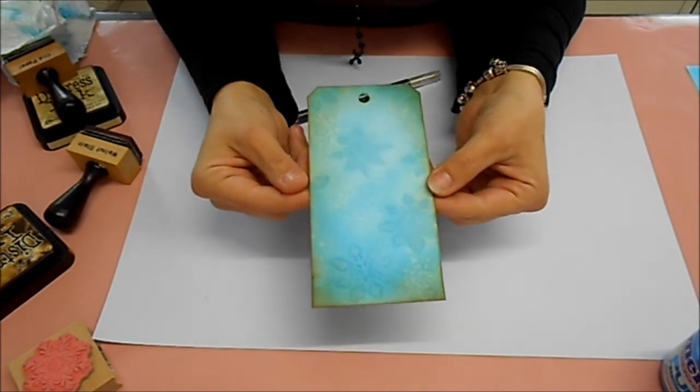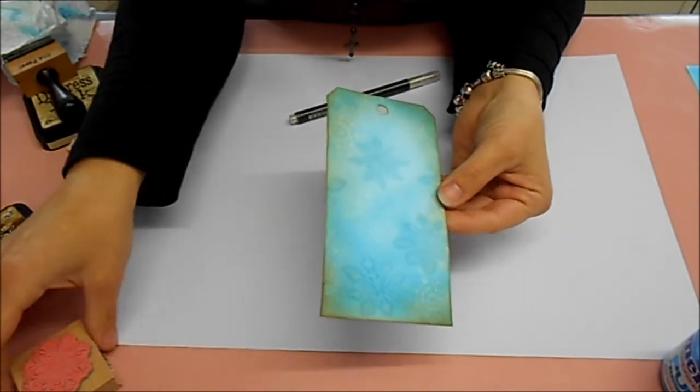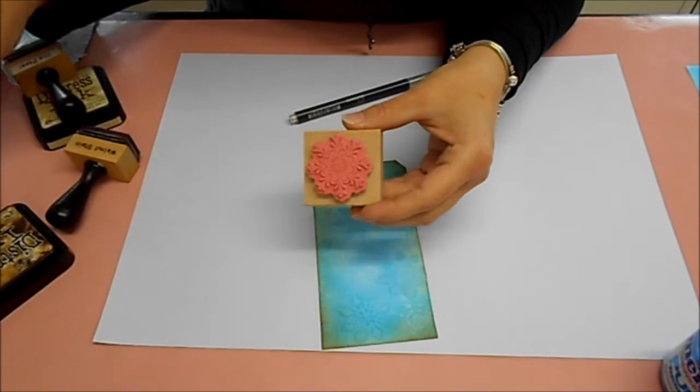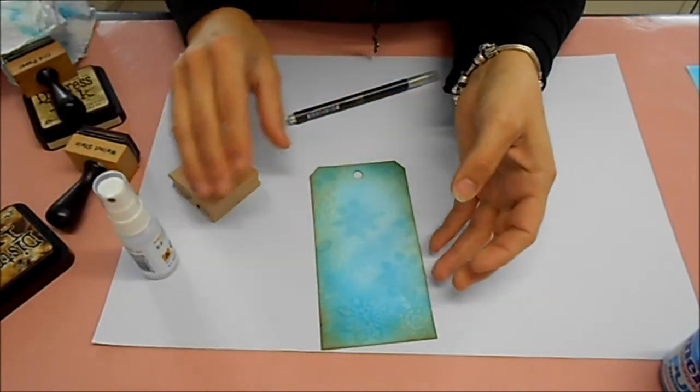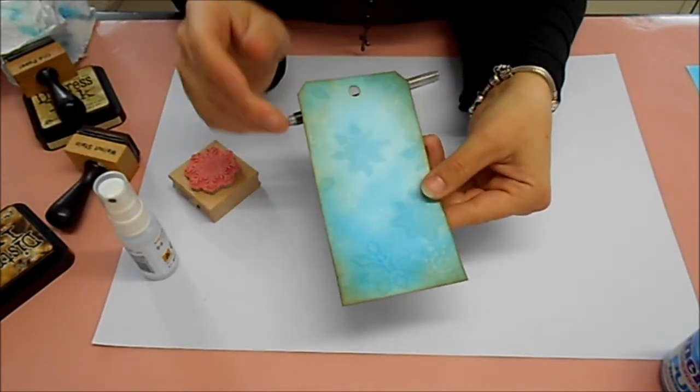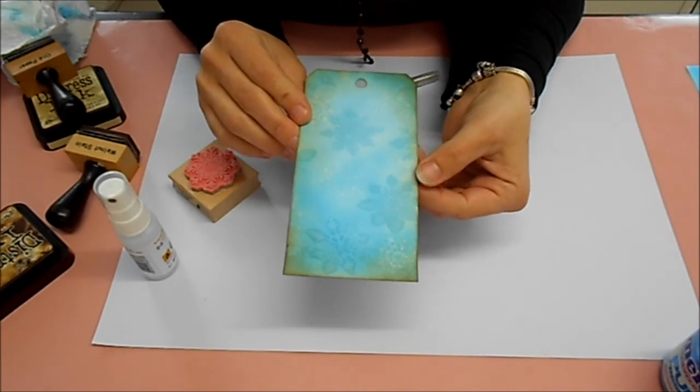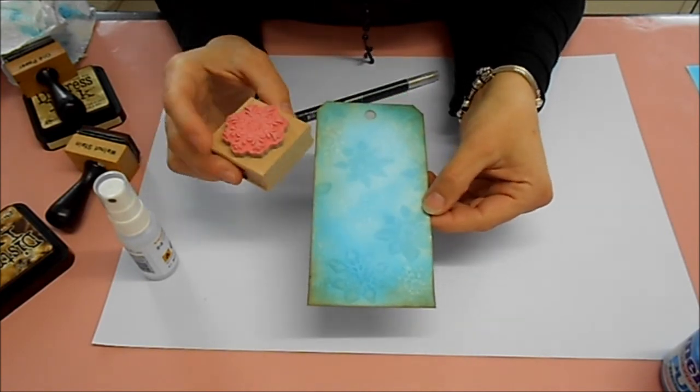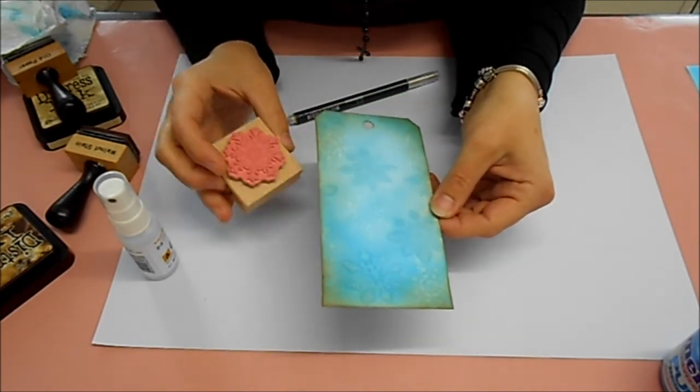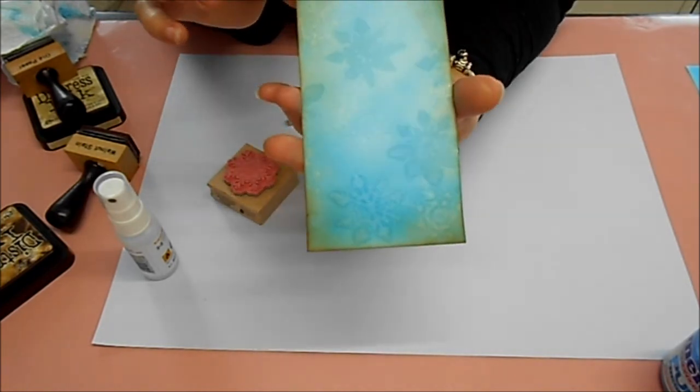So Lydia already showed you a technique she does with coloring the stamp and then spray the activator on it and stamp. But you can also do it like this. Airbrush the entire area in just one color and then stamp with just the activator on it and you will get this background you see here.